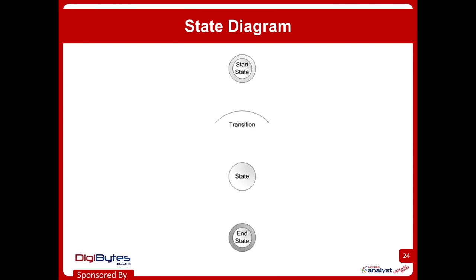The state diagram is how we show visually those transitions between states. There's a start state and an end state. Everything else is just a circle called a state, and then we have arrows that show the direction of the state transition — the words on that arrow are the event that causes the transition. The place you're going to look to use state diagrams or state tables is anywhere you have complicated workflow, like an approval workflow. A great example would be a loan application system, watching the flow of that loan through your system — those are all different state changes.